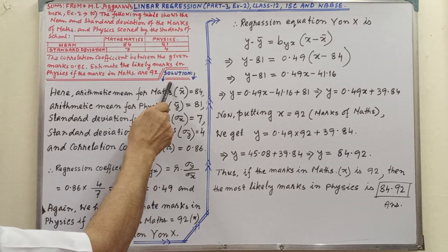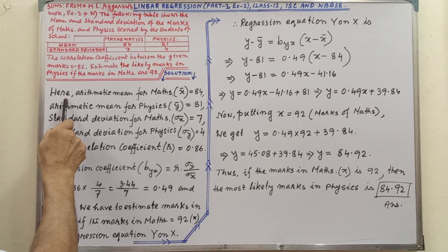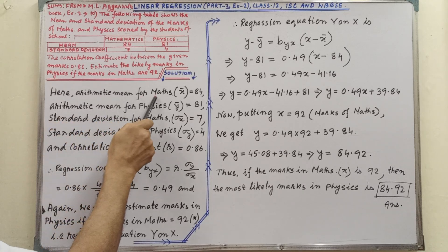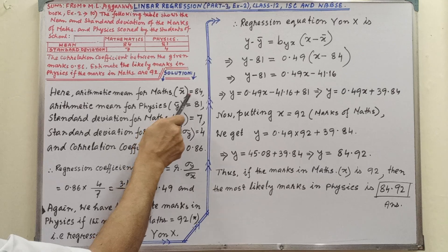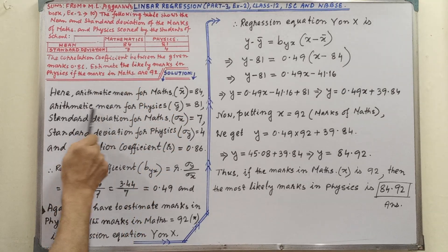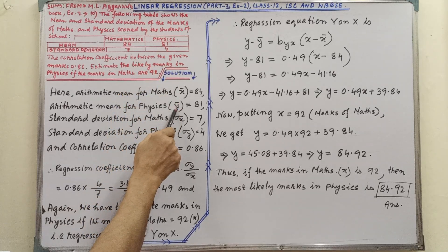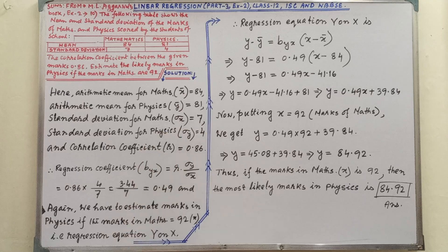Now, pay your attention on the solution. What are given? That we have to write first. Here, arithmetic mean for maths, that is x bar, equals 84. That is given. Arithmetic mean for physics, that is y bar, equals 81.